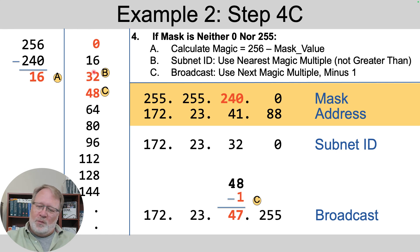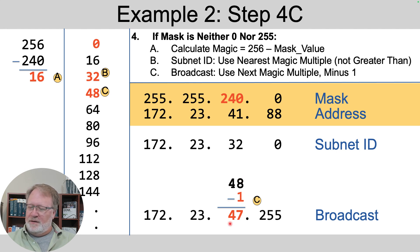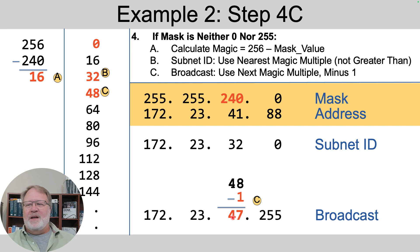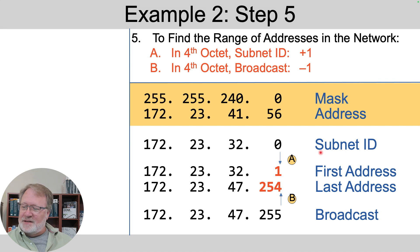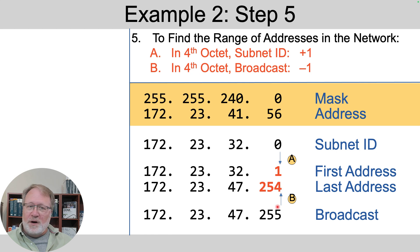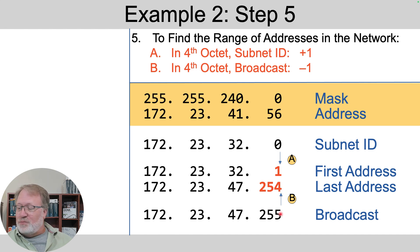Step 4c: we picked 32 for the subnet ID. For the broadcast address, pick the next multiple — which is 48 — and always subtract 1 from it. That gives us 47 in that octet. So now we have the subnet ID and subnet broadcast address. Armed with those, step five is easy: take the subnet ID and add 1 in the fourth octet to get 172.23.32.1. Take the subnet broadcast address and subtract 1 in the fourth octet to get 172.23.47.254.